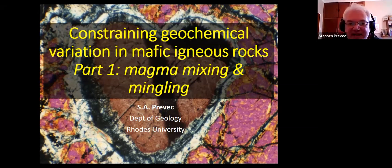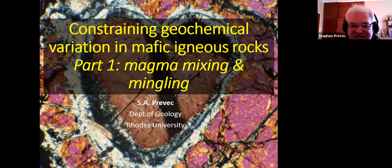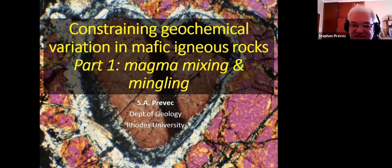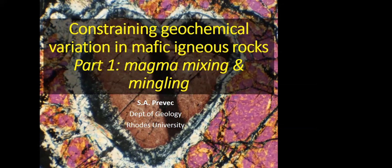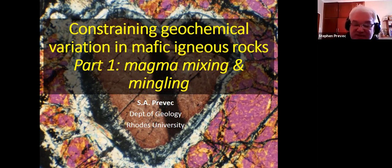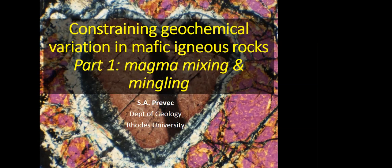So my original theme here, constraining geochemical variation in mafic igneous rocks, has been kind of condensed. I realized it was a talk that I had prepared for my postgraduate students last year. Okay, so this was part of a talk that I prepared originally for my postgraduate students to sort of try to give them some simplification or constraints on what kind of process can cause the geochemistry of their mafic magmatic rocks to change.